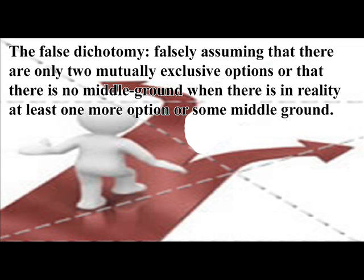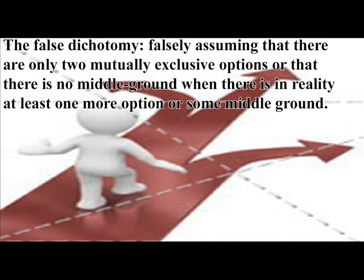And all across the media you will see the false dichotomy fallacy, a.k.a. the either-or fallacy, a.k.a. binary thinking fallacy — falsely assuming that there are only two mutually exclusive options or that there is no middle ground, when in reality there is at least one more option or some middle ground. Why not use the metric system for international purposes and the imperial system at home?